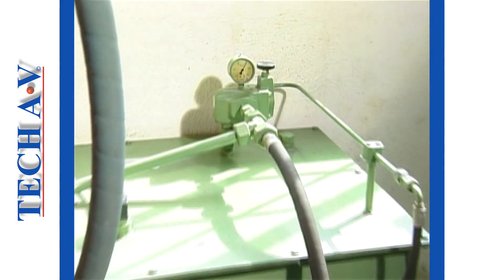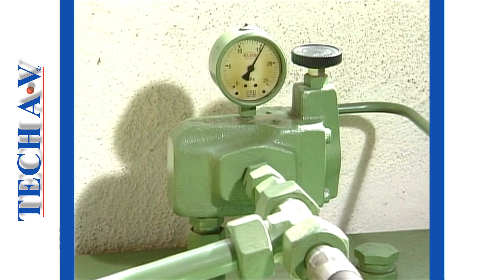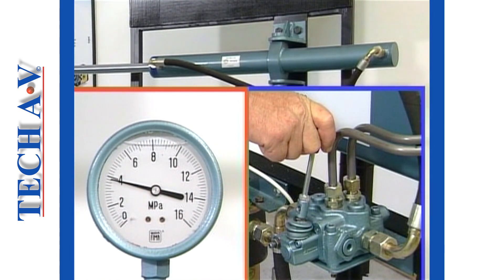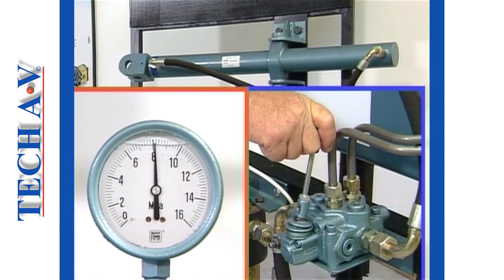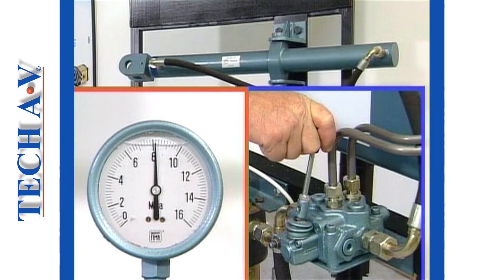Most industrial systems feature a system pressure gauge. This is a valuable aid in diagnosing problems. For example, on our demonstration model, if we hold the control valve in after the ram has reached the end of its stroke, the gauge needle will shoot up rapidly. The pressure relief valve will also be heard as it dumps the full flow of oil from the pump back into the return line. The pressure gauge reading at this time is reflecting the relief valve's setting.